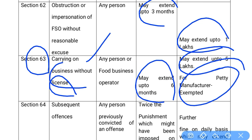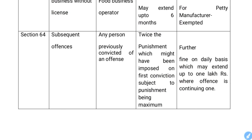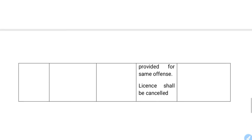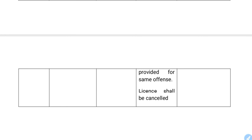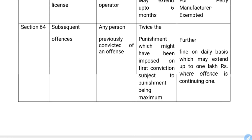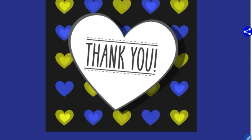Section 64 covers subsequent offenses. If you repeat an offense, the punishment imposed on first conviction will be doubled as the maximum. Additionally, a further fine on a daily basis may extend up to ₹1 lakh where the offense is continuing. For repeated offenses, the license shall also be cancelled.